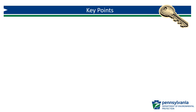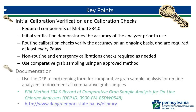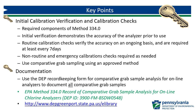Let's review the key points from this video. An initial calibration verification and calibration checks are required components of Method 334.0. The initial calibration verification demonstrates the accuracy of the analyzer prior to use for compliance monitoring or log inactivation calculations. Routine calibration checks verify the accuracy of the analyzer on an ongoing basis — at a minimum, they are required every 7 days. Non-routine and emergency calibration checks are required as needed. Use comparative grab sampling that uses an approved method and has met all of the grab monitoring requirements of Method 334.0. For documentation, use the DEP record-keeping form for comparative grab sample analysis for online analyzers, and document all comparative grab samples.